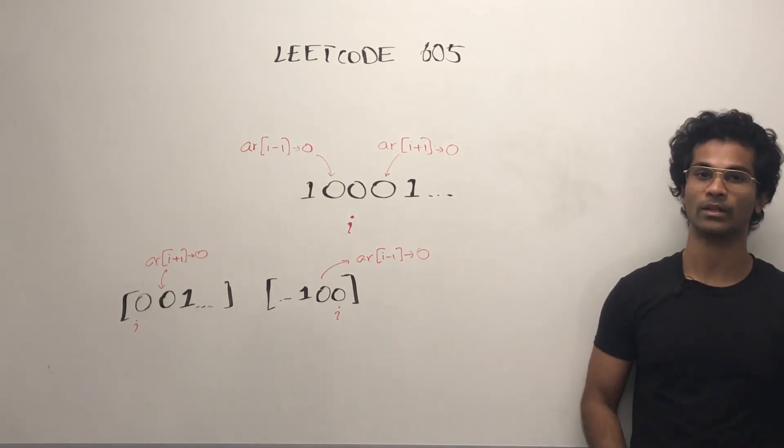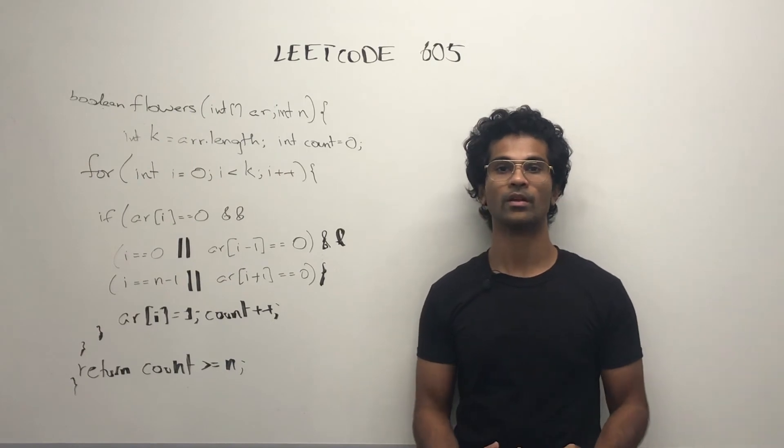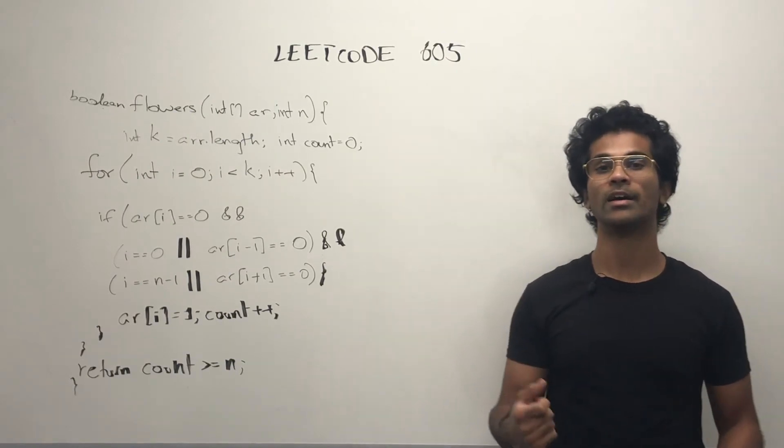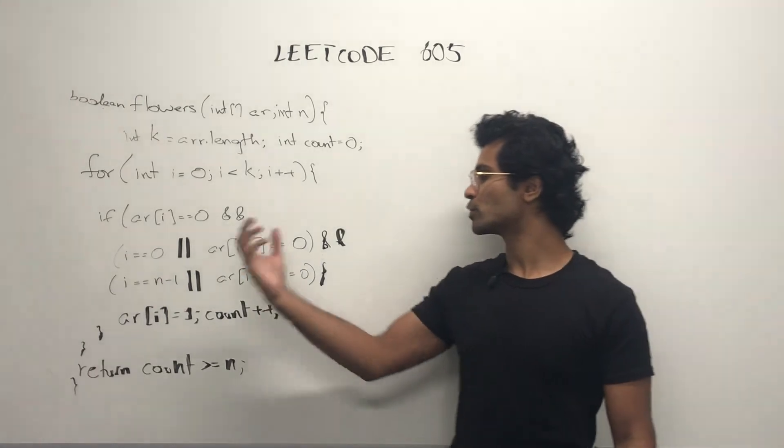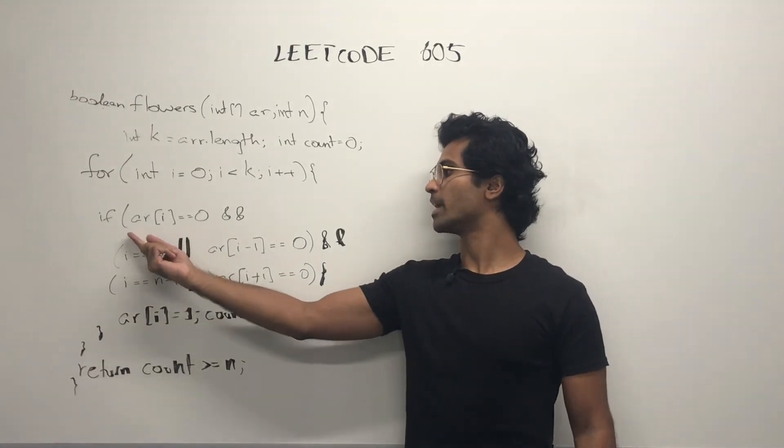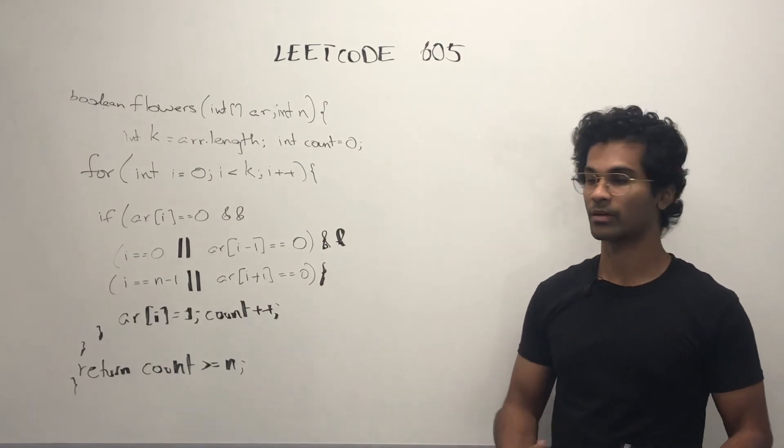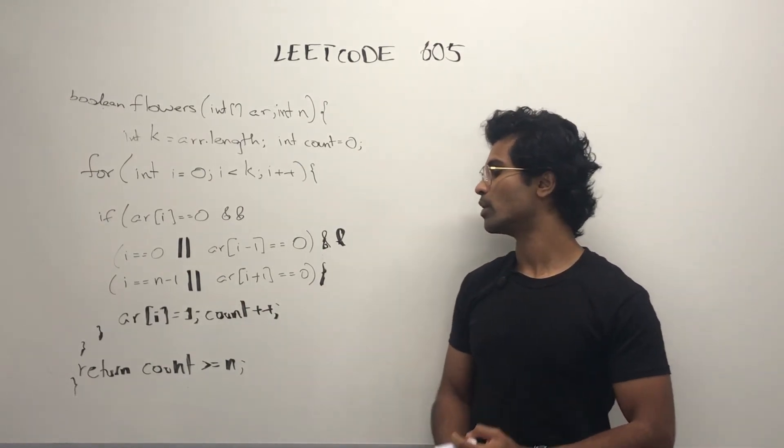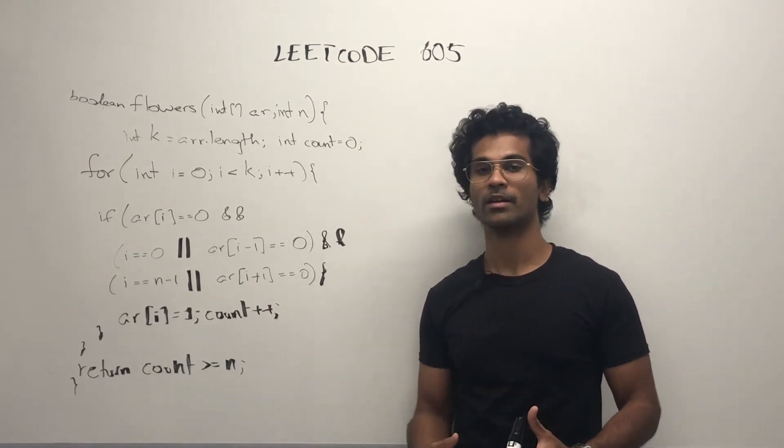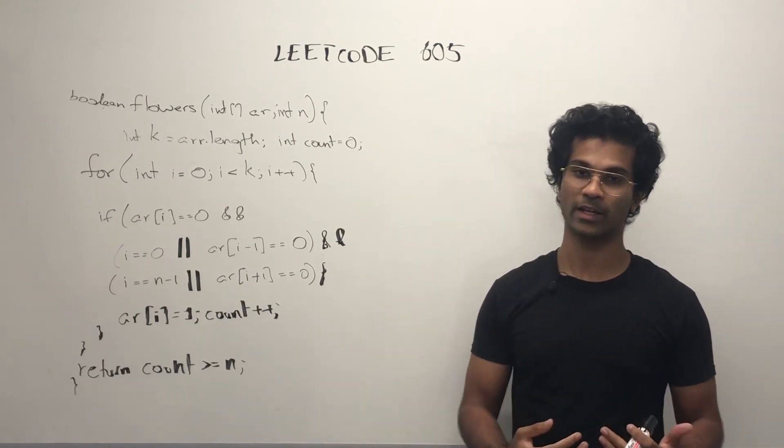Now let's look at the code. Code is pretty simple. All we do is grab the length of the array and initialize a count variable. First, we've been iterating and if at any point, ar of i is 0, we may be able to put a flower there. What we have to do is just see, okay, are we at the edge case or not the edge case?